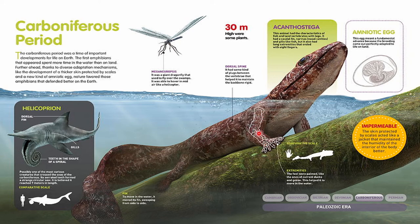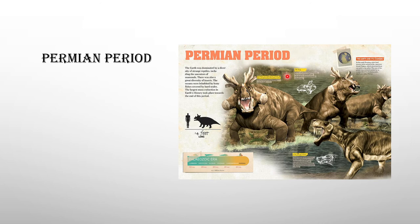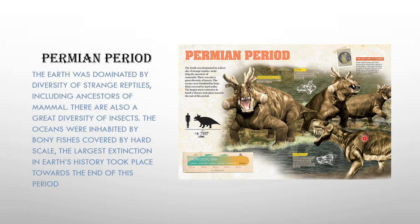Moving on to the last period — the Permian period. Land mammals came; for example, Estemmenosuchus was a 4.5-meter-long animal, and Lycaenops was not very big but was carnivorous. The Earth was dominated by strange reptiles during this time, with great diversity of insects, and the ocean was covered with bony fishes.